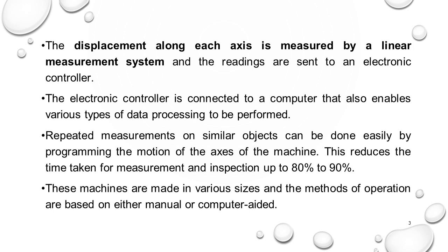Suppose if you want to measure a dimension five times, the average is taken. Repeated measurements on similar objects can be done easily by programming the motion of the axis of the machine. This reduces the time taken for measurement and inspection by 80 to 90 percent. These machines are made in various sizes depending upon the application of each industry.